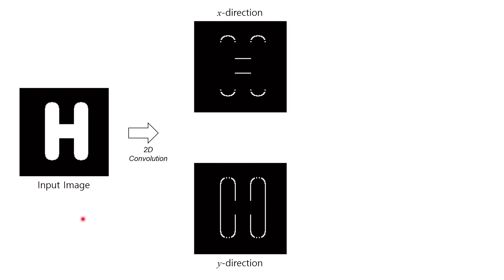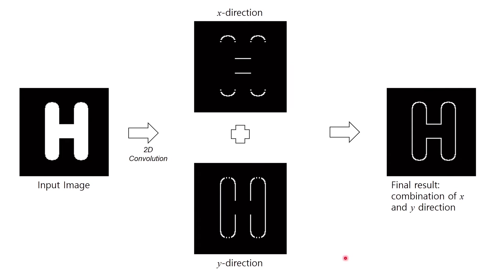To get the full edges from the image, we apply the partial derivative both in x and y direction across the entire image. Here is an example of the result after applying the Sobel kernel in both x and y directions. This is the result for the x direction and this is the result for the y direction. To get the full edges from this image, we simply add these two results together.